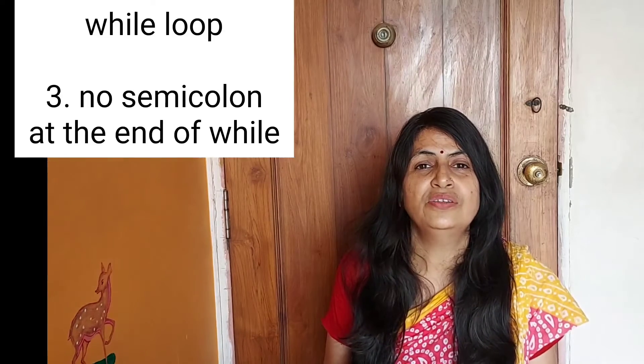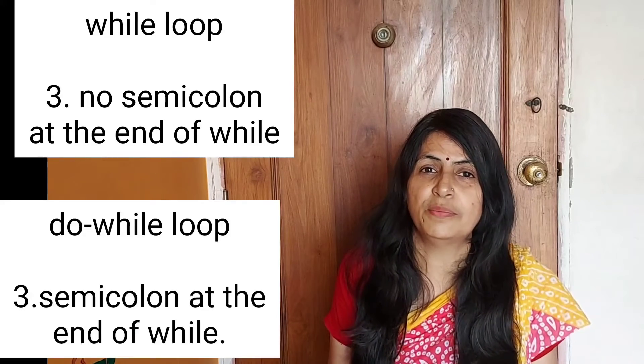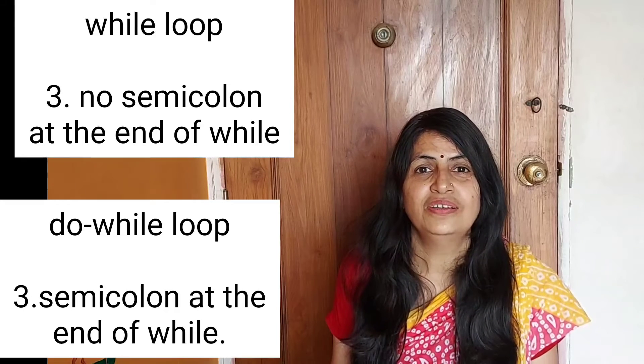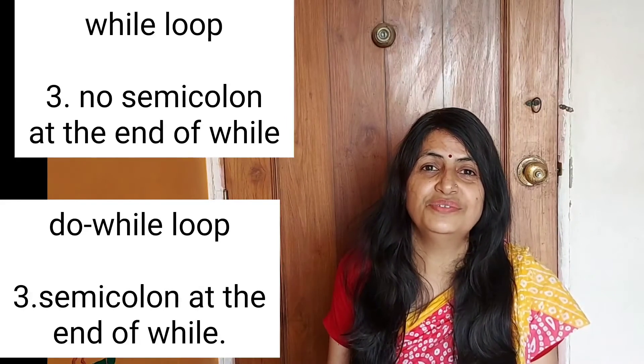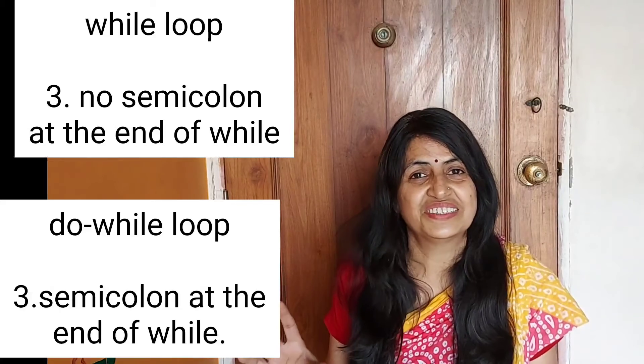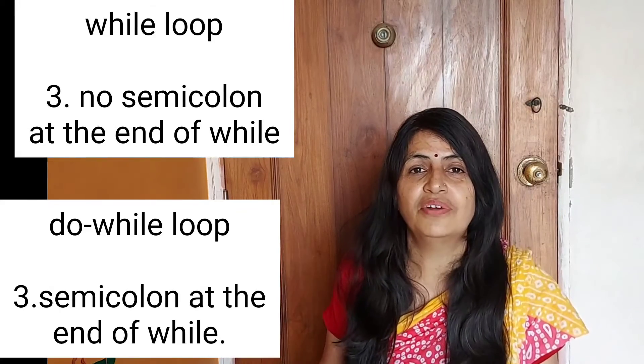The third difference is: in while loop, we do not need to use a semicolon sign, but in do while loop, we must use a semicolon sign. This is the third difference.